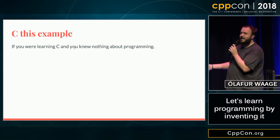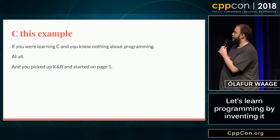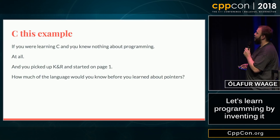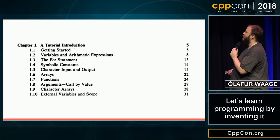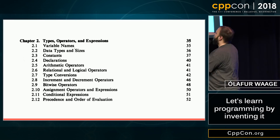Let's have some fun with this example. Say we are all learning C, we know nothing at all, we pick up K&R on page one. How much of the language would you know before you learn about pointers? Going through the index: not in chapter one — some might say arrays, but we have call by value. Not in chapter two either — we have constants, type conversions, bitwise operators. We're on page 52 now.